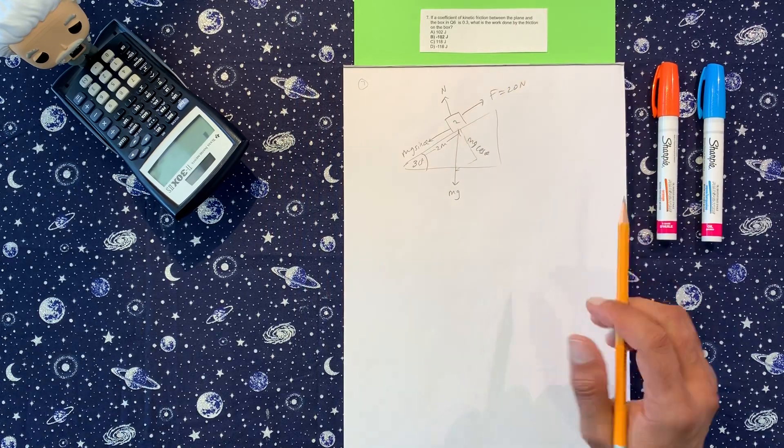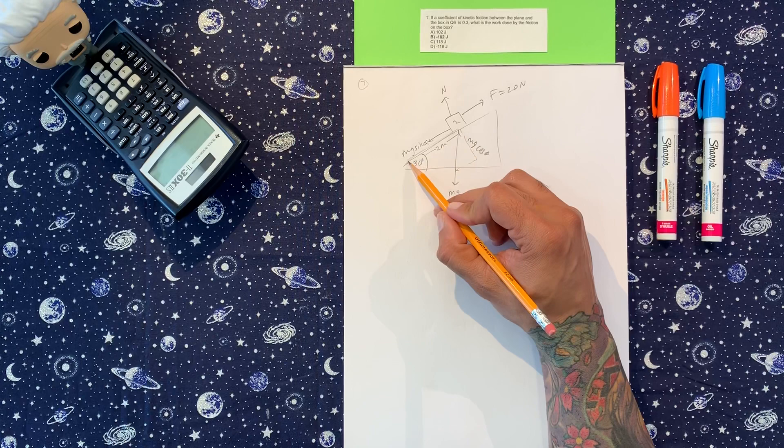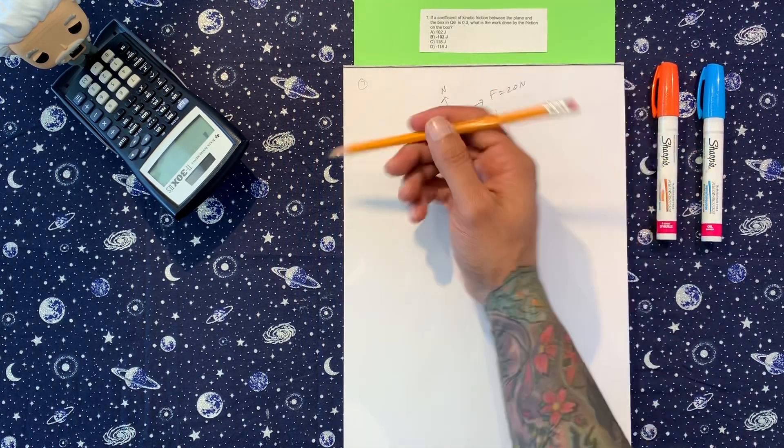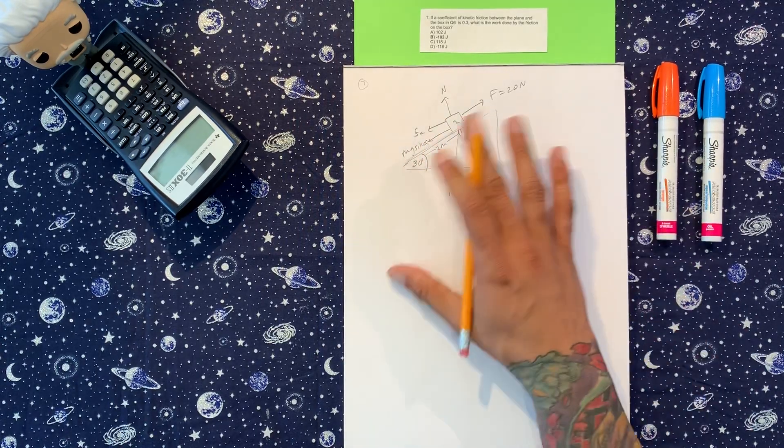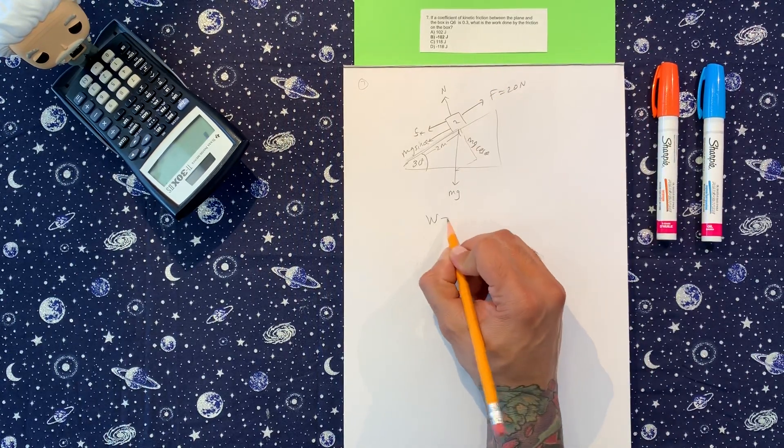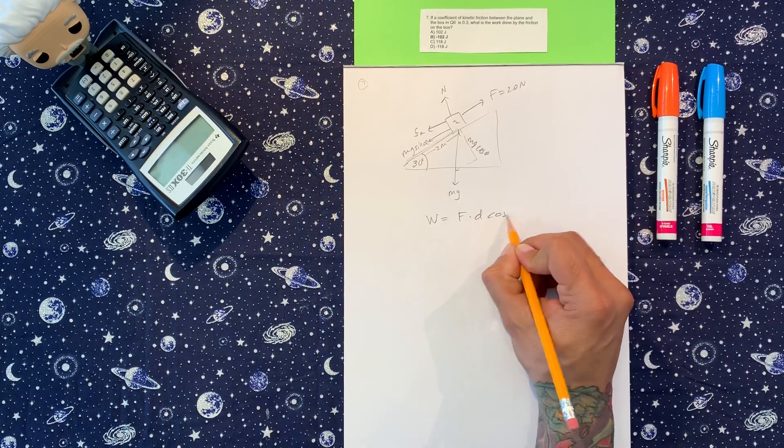So this was from problem six. Now it says the coefficient of friction between the plane and the box is 0.3. So if the box is moving that way, friction is in this direction. Now what is the work done by the friction on the box? Again, we have our formula: f dot d cosine theta.